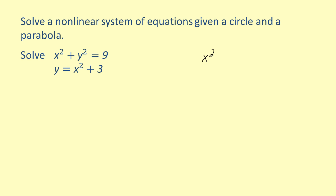We have two systems of equations. Let's solve our bottom equation in terms of x squared. By subtracting three from each side of the equation, we have x squared is equal to y minus three. So we can now write x squared as an expression using only y. Let's substitute this into our first equation in the system for x squared. By doing this, we get y minus three plus y squared is equal to nine.